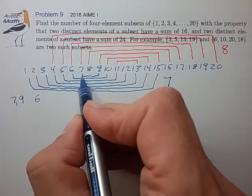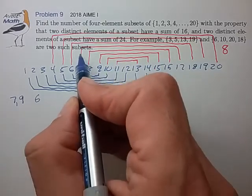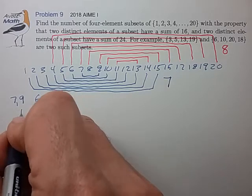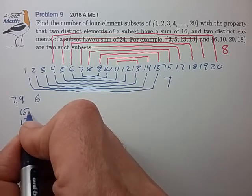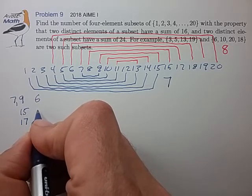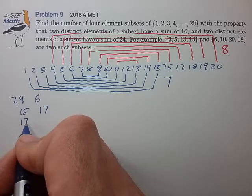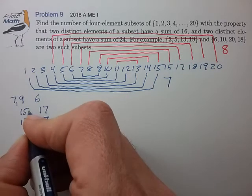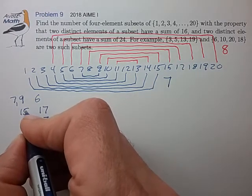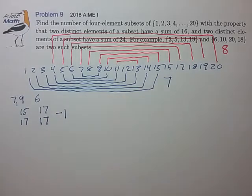Or it could overlap, in which case the third element could be a 15, or the third element could be a 17. Now if it contains the 15, the fourth number in the subset could be any of the 17 remaining numbers. If it contains the 17, it could again be any of the 17 remaining numbers. But this double counts the case where you have 15 and 17. So let's just put a minus 1 there to correct for that minor overcount.